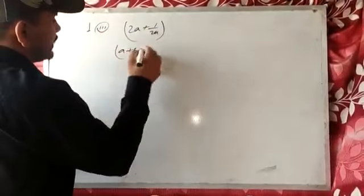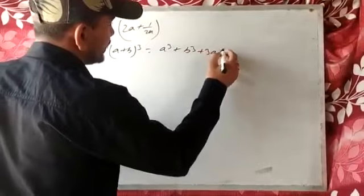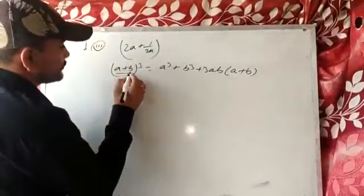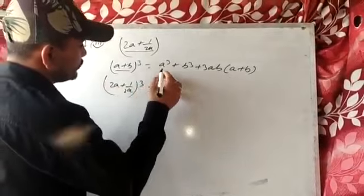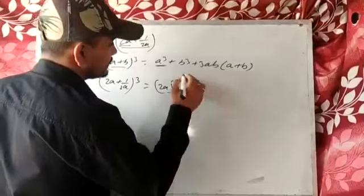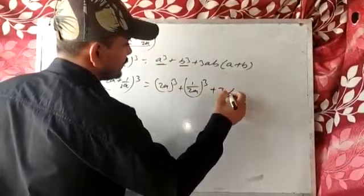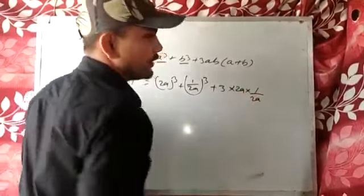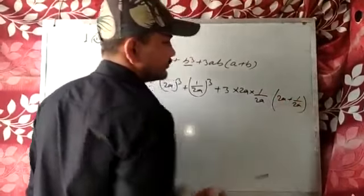First I will write: a plus b whole cube is equal to a cube plus b cube plus 3ab into a plus b. In place of a plus b I will put 2a plus 1 by 2a. So 2a whole cube plus 1 by 2a whole cube plus 3 into 2a into 1 by 2a into 2a plus 1 by 2a.